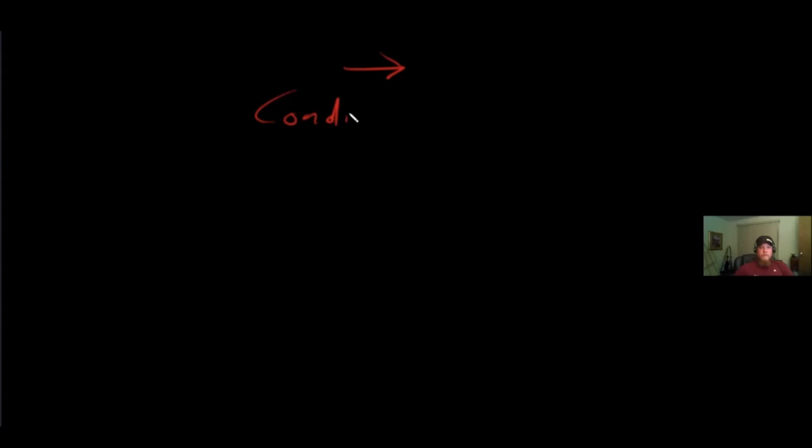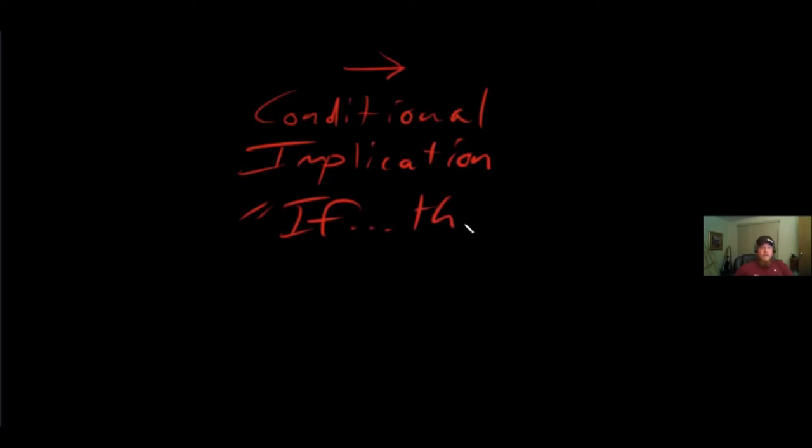The first connective I want to talk about is the notion of the arrow — the conditional statement. Sometimes you'll see it called an implication or a material implication. Basically, these are if-then statements. There are also conjunctions or 'and' statements and disjunctions or 'or' statements. We're going to spend the first bit of time talking about conditionals, if-then statements, and how we translate them into formal language and how we deal with them.